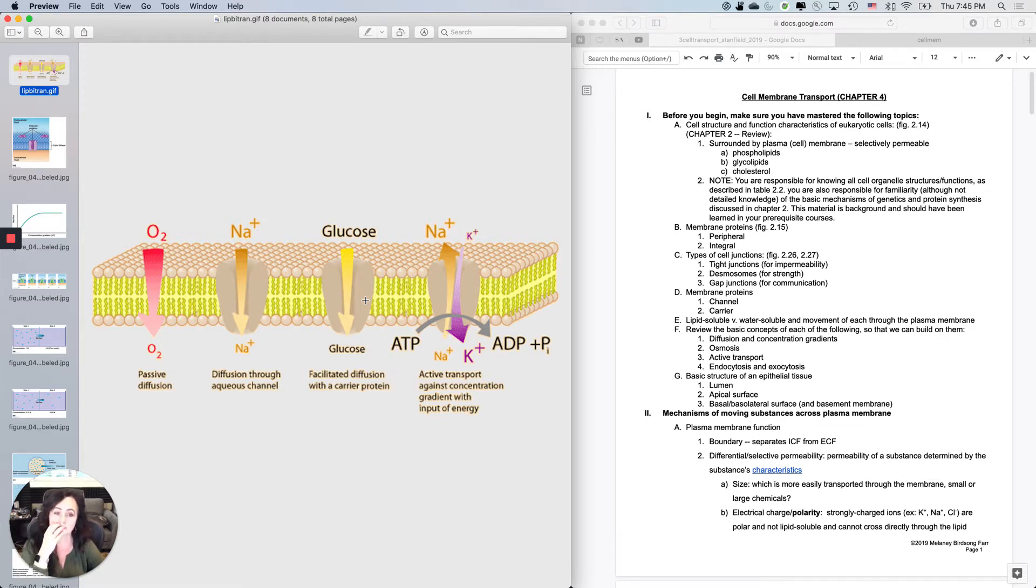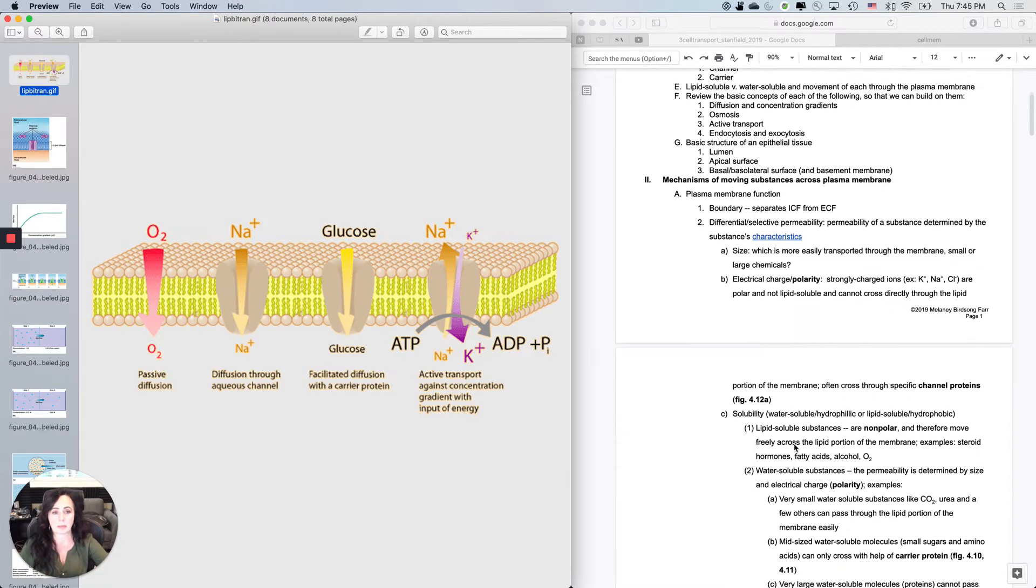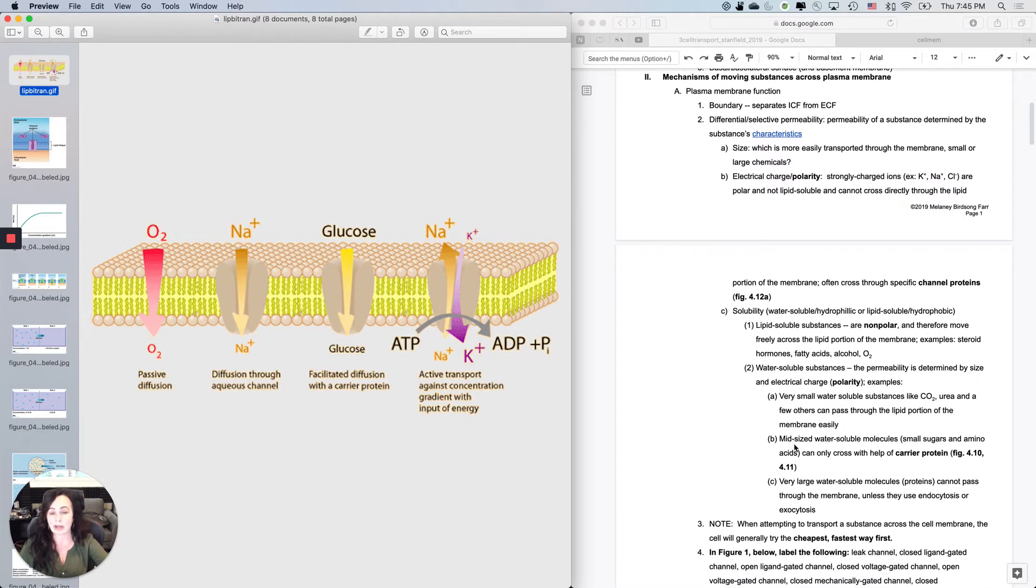Mechanisms of moving things across the plasma membrane. A plasma membrane or cell membrane is a phospholipid bilayer with embedded proteins. Its function is really the bouncer of the cell. It separates the ICF and the ECF, but it allows for things to come in and out, but only selectively.